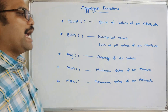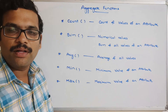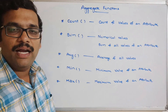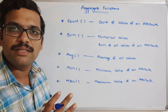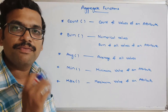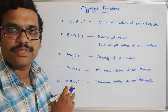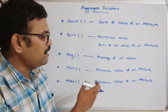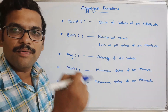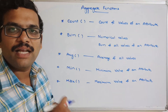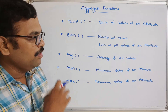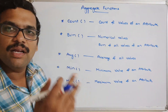So these are the aggregate functions in SQL. In the previous sessions we discussed the SELECT statement, and we left two concepts — GROUP BY and HAVING. In order to understand GROUP BY and HAVING, we first need to know about aggregate functions. In the next session we'll cover GROUP BY and HAVING in the SELECT command. Now let us execute each function in MySQL.